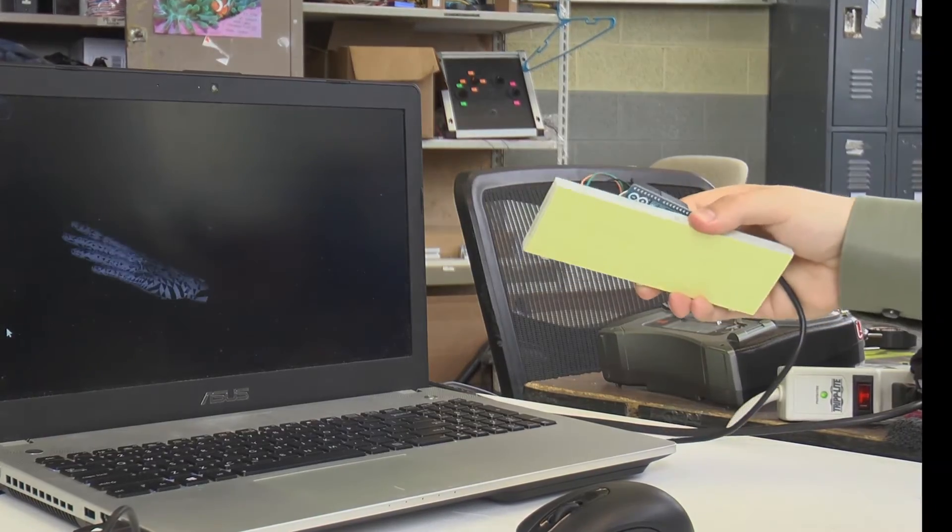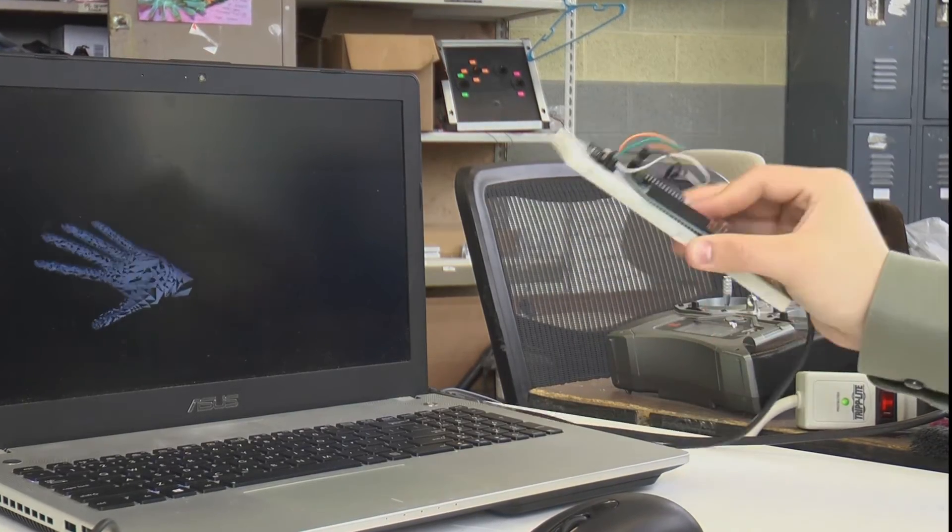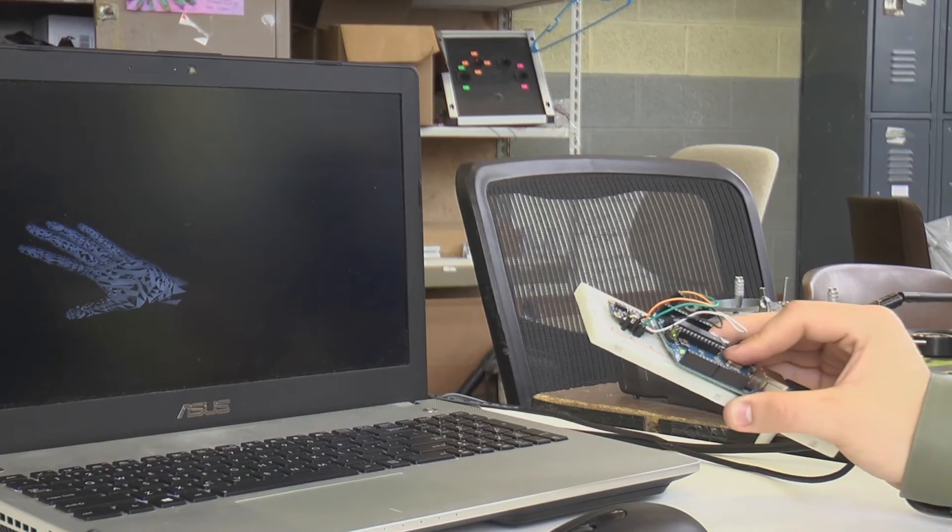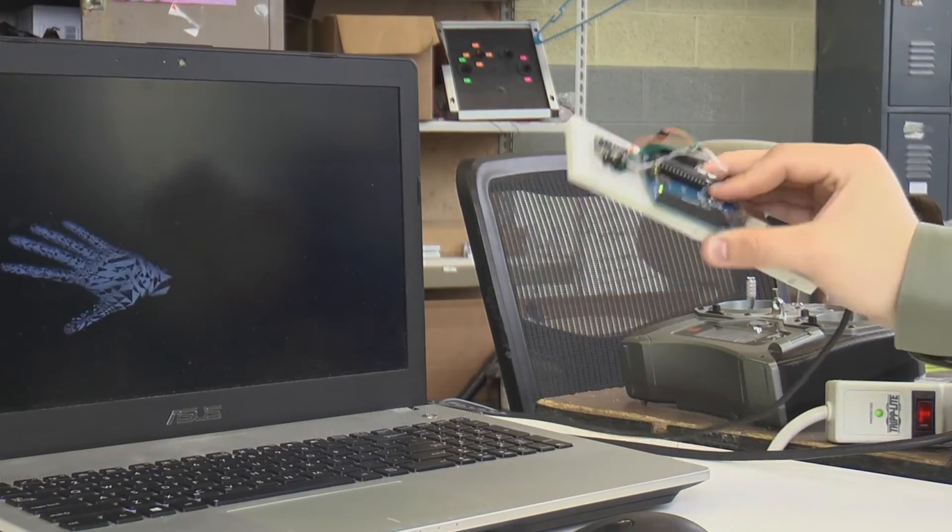He added a chip to interpret the gestures based on the angle of the hand. He added another chip for 3D manipulation, to know where the hand is at all times in space compared to the body. When the movement is interpreted, the letter is announced through a speaker.